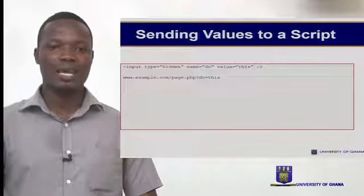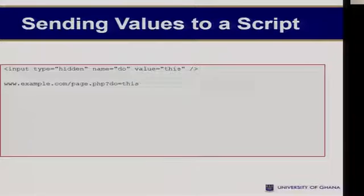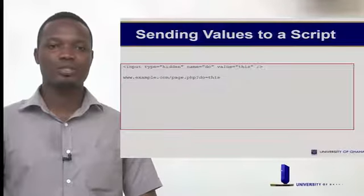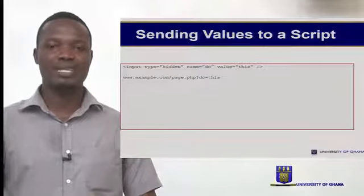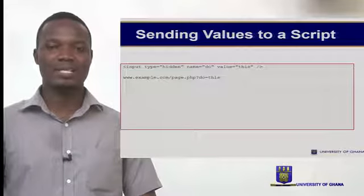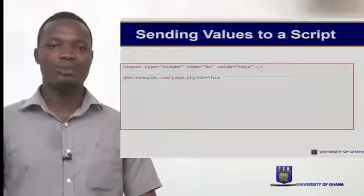This is how it would look like. We have www.example.com/page.php. The question mark tells us that we are passing some variable to the page. This variable would be called 'do' and the value would be 'this'. So there are two ways: we could either use an input hidden field, or we can use a GET method, where we pass the variable through the URL.